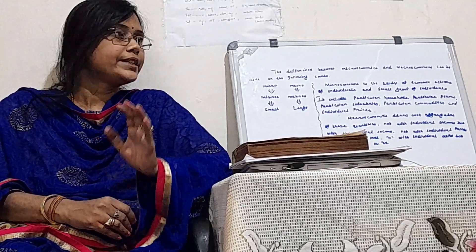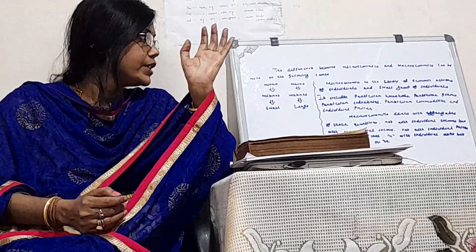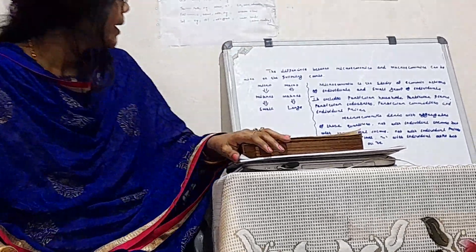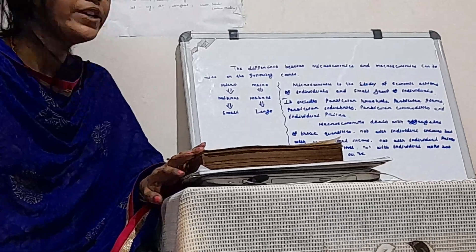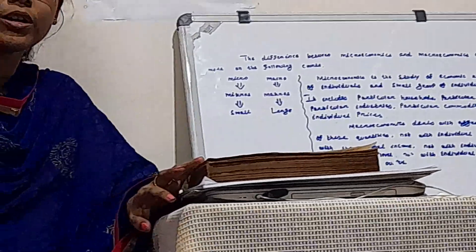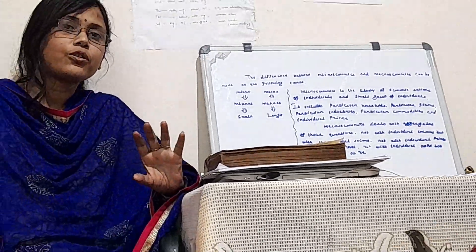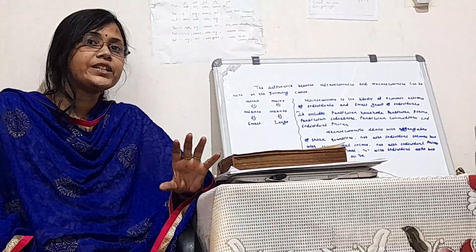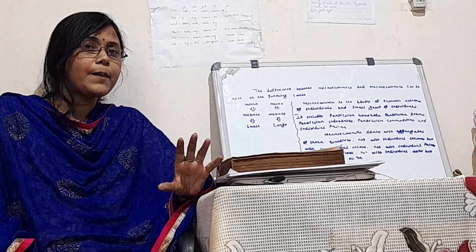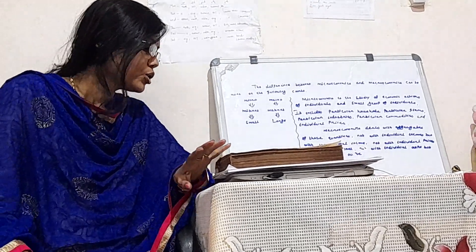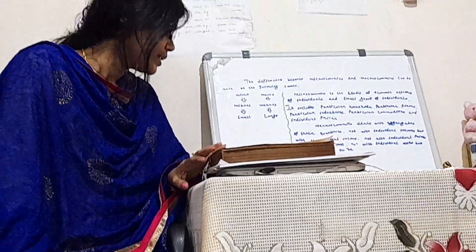Microeconomics is derived from the Greek word mikros, which means small. Macroeconomics is derived from the Greek word makros, which means large.